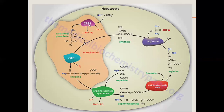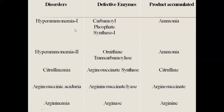Now let's see one by one: if each enzyme has a genetic defect or deficiency, which molecule or product will accumulate in the body and what condition or disorder will result. This is summarized in a table. These are the five defective enzymes of the urea cycle: carbamoyl phosphate synthetase 1 in the first reaction, ornithine transcarbamylase in the second, arginosuccinate synthetase in the third, arginosuccinate lyase in the fourth, and arginase in the fifth reaction.